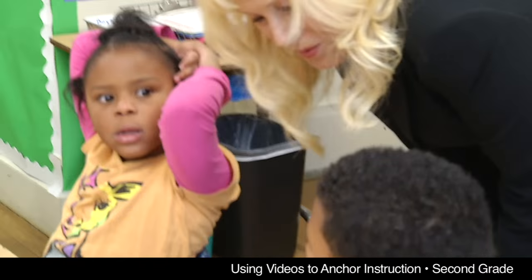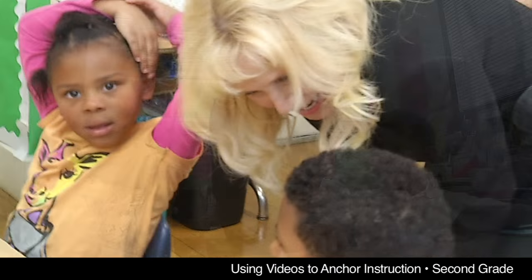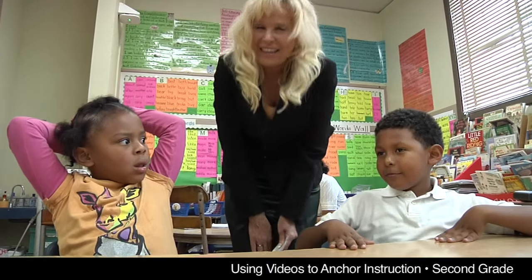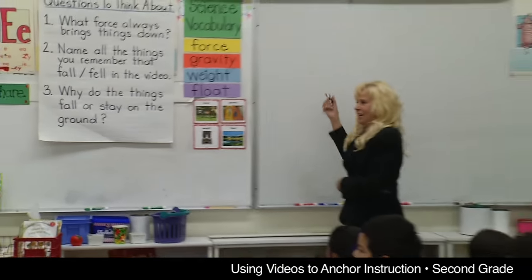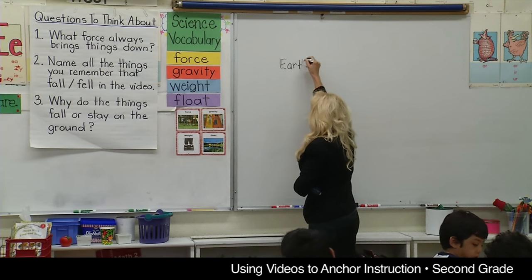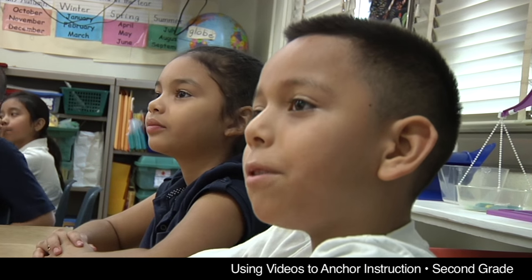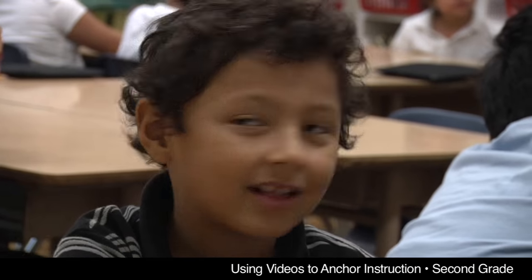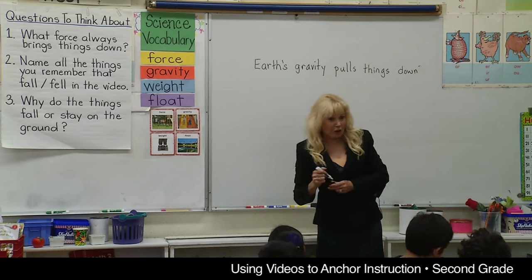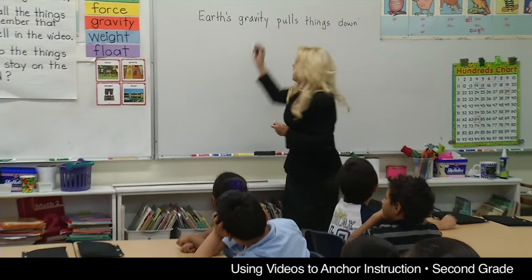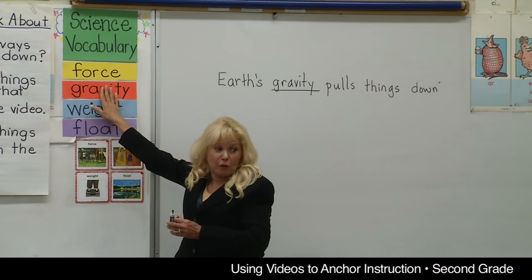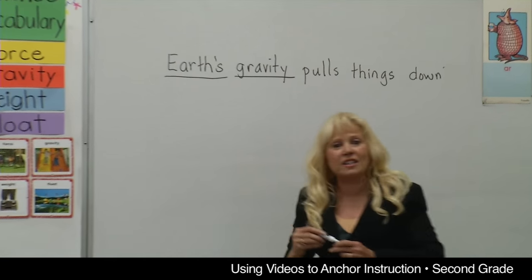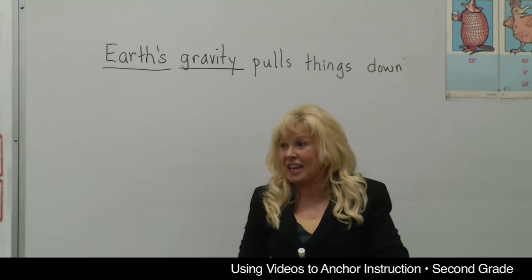The earth's gravity. Very good. Now let's try it in a complete sentence. The earth's gravity always pulls things down. Excellent. I love that answer. What did you say? Earth's gravity. Let's say it in a complete sentence. Earth's gravity pulls things down. All right, so what is the force that's pulling things down? Gravity. That's right. The force that pulls things down is gravity. And I love that some of you knew that it was the earth's gravity that pulls things down.